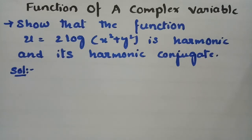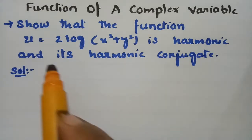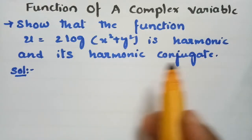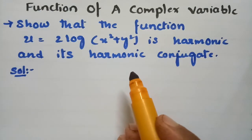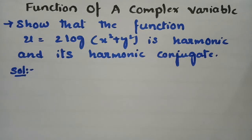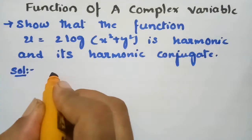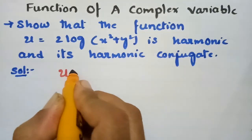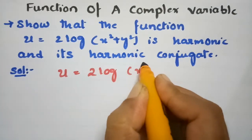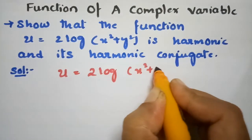In today's video, I am going to discuss a problem from functions of a complex variable. I am going to show that the function u is harmonic and also find the harmonic conjugate. The conjugate of u is nothing but v. From the question, u is equal to 2 log of x square plus y square.